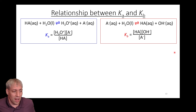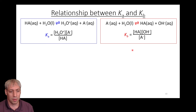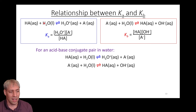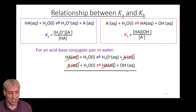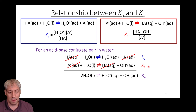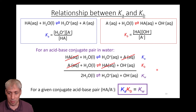We have Ka and Kb. What's interesting is they're not independent. HA is the acid, A- is the conjugate base. If you take the Ka and Kb equations and actually combine them — cancel out the HA's and A-'s — you end up with H2O in equilibrium with H3O+ and OH-, which is effectively the Kw equilibrium. This tells us Ka times Kb equals Kw. For any conjugate acid-base pair, the strength of the acid and the strength of the base are related by the Kw equilibrium constant.